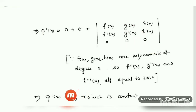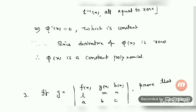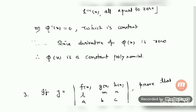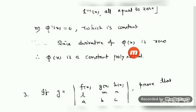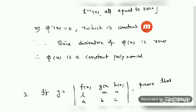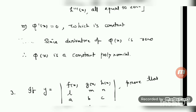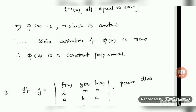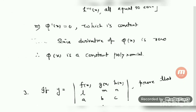So the conclusion we have got is φ'(x) = 0. Since the derivative of φ(x) is 0, φ(x) is a constant polynomial. We know the derivative of a constant is 0, so since the derivative of φ(x) is 0, φ(x) will be a constant polynomial.